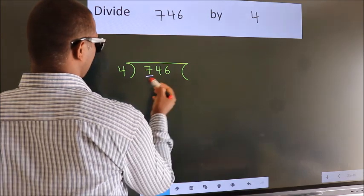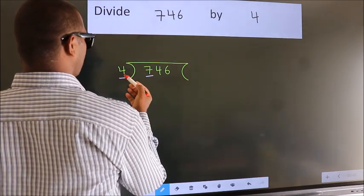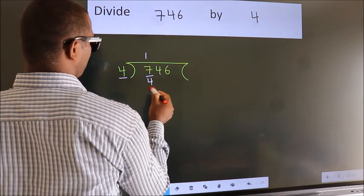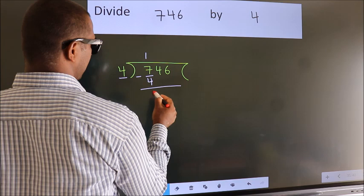Here we have 7, here 4. A number close to 7 in the 4 times table is 4 once 4. Now we should subtract. We get 3.